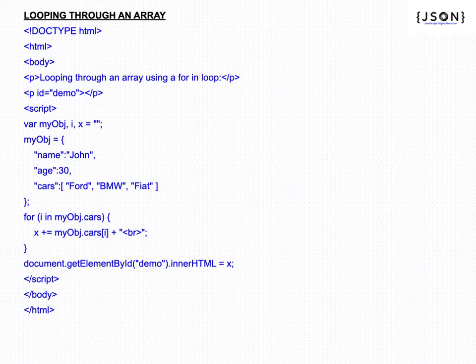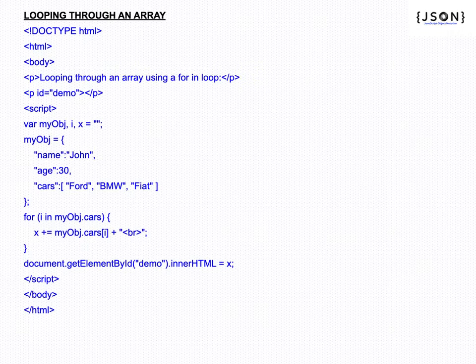So the output displays Ford in the first line, BMW in the second line, and Fiat in the third line. That is how looping through an array in JSON works.